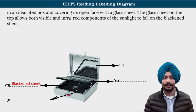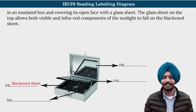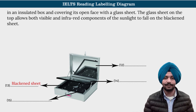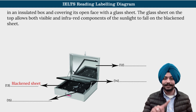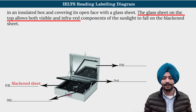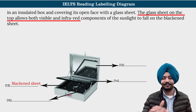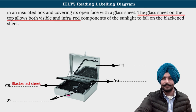Moving forward: 'covering its open face with a glass sheet — the glass sheet on top allows both visible and infrared components of sunlight to fall on the blackened sheet.' So here, above question 15, there is something — that sheet is the glass sheet. So our answer for question 14 would be: glass sheet.